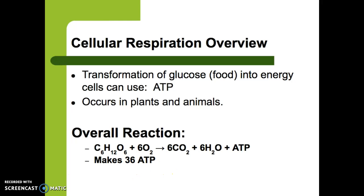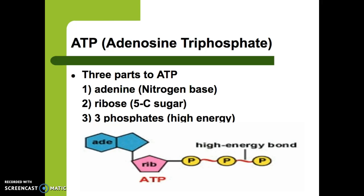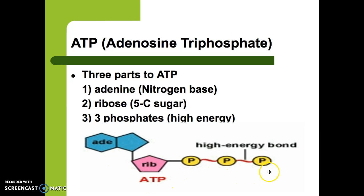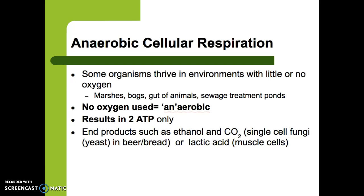Now let's look at what ATP is. ATP stands for adenosine triphosphate. There are three parts: adenine, which is a nitrogen base; a ribose sugar; and three phosphates. This might look similar to a nucleotide — and actually it is very closely related to the nucleotide found in DNA and RNA. It's just a different type of nucleotide.